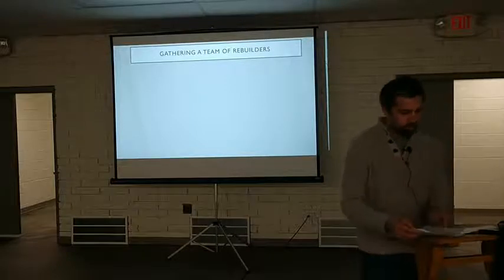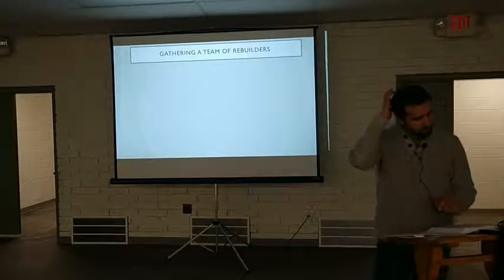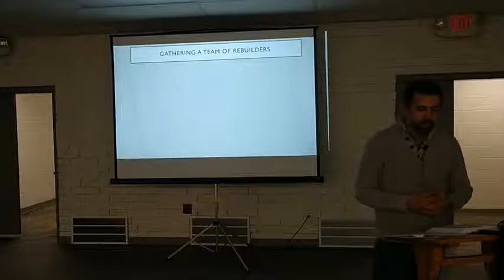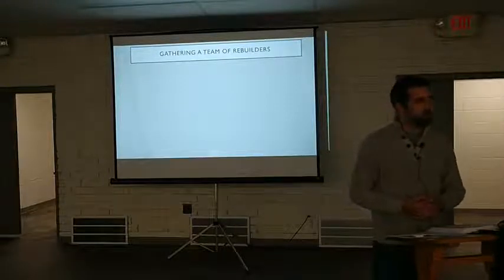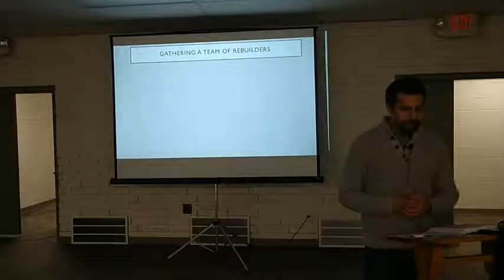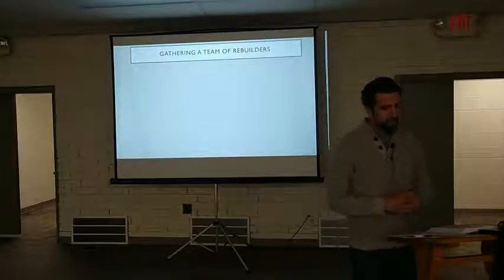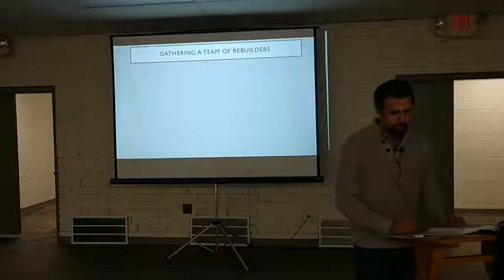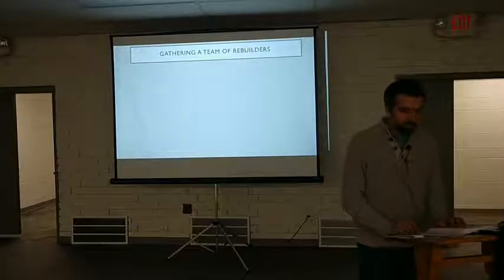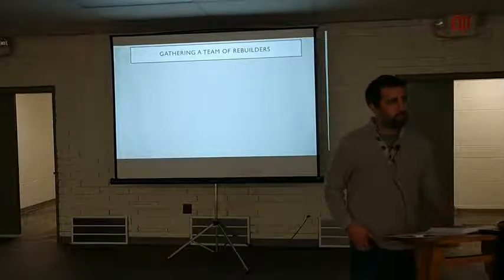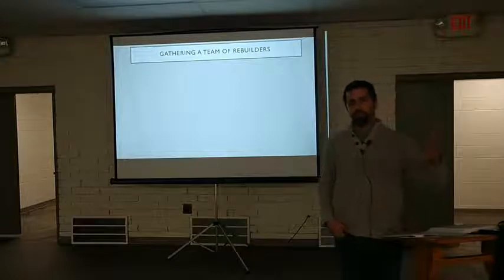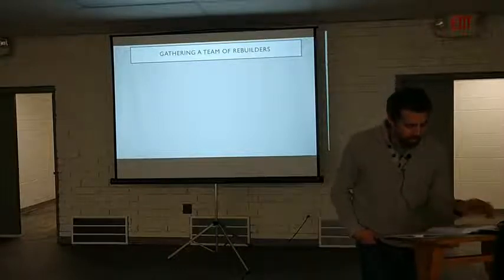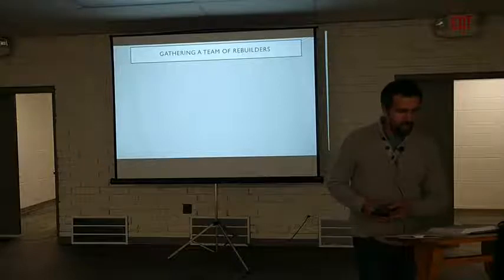Let's pick up now in verse 7 of Nehemiah chapter 2. Notice these four months of prayer have given him time to think about a process and a plan. In a letter to Asaph, the keeper of the king's forest, that he may give me timber to make beams for the gates of the fortress of the temple and for the wall of the city and the house that I shall occupy — and the king granted what I asked. These details show that this is not an off-the-cuff sort of thing. There's been prayer and planning.